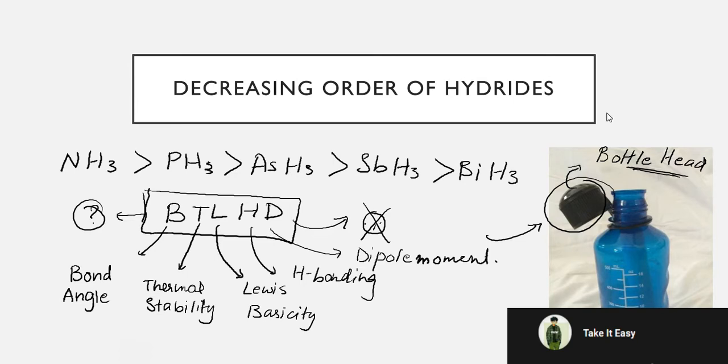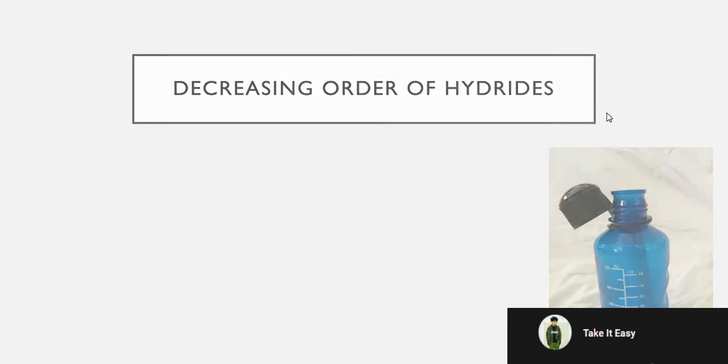So all of these properties - bond angle, thermal stability, Lewis basicity, hydrogen bonding, and dipole moment - decrease along the group, decrease down the group in the group 15 elements. Now the basic reason for that is the electronegativity.